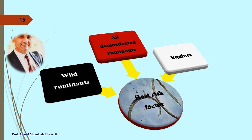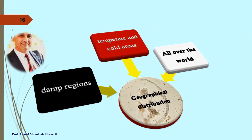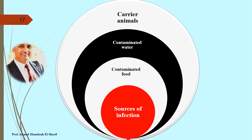Epidemiological patterns of Lung Worm — Host Risk Factor: all domesticated ruminants, all family Equidae, as well as wild ruminants. Lung worms are distributed in all temperate and cold areas throughout the world. Sources of infection include contaminated food and water with fecal matter containing eggs or larval stage one, as well as carrier animals.